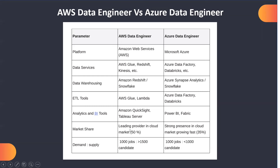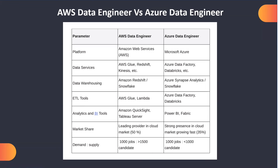Azure has been catching up with AWS for the past four years and growing significantly — it may even overtake AWS in coming years. Looking at demand and supply in the job market: for AWS, there are hundreds of jobs but also more than 1,500 candidates because many people have learned AWS. For Azure, the demand is higher but the supply of qualified candidates is very low — fewer than a thousand good candidates for every thousand jobs. The difference between the two is not significant in terms of skills needed.